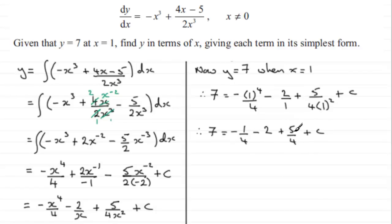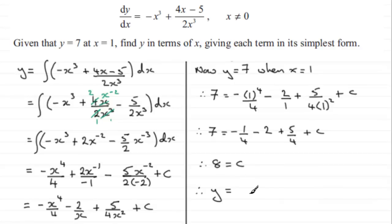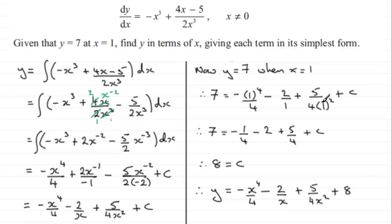Working out the right-hand side: minus a quarter plus 5 quarters is 4 quarters, or 1. Then minus 2 plus 1 is minus 1. Adding 1 to both sides: 7 plus 1 is 8, so c equals 8. Substituting back, we finally get y equals minus x to the power 4 over 4, minus 2 over x, plus 5 over 4x squared, plus 8. That's y in terms of x, with each term in its simplest form.